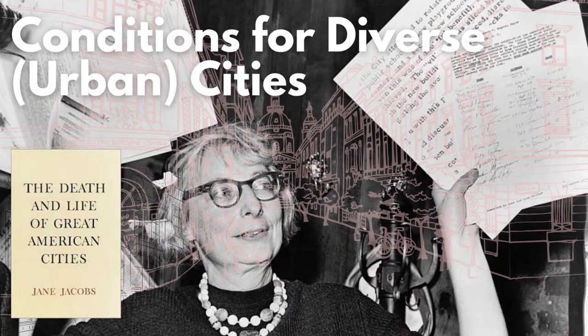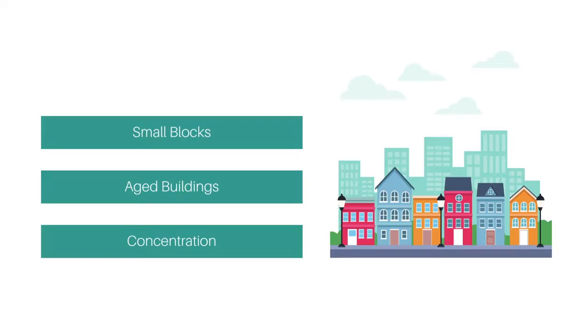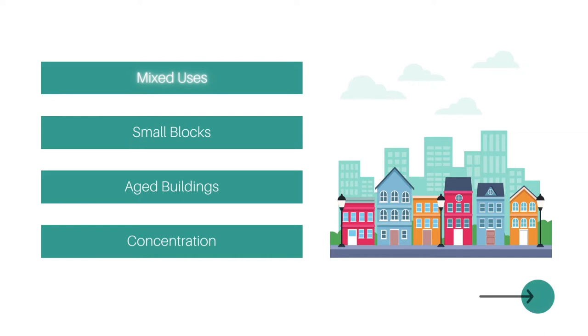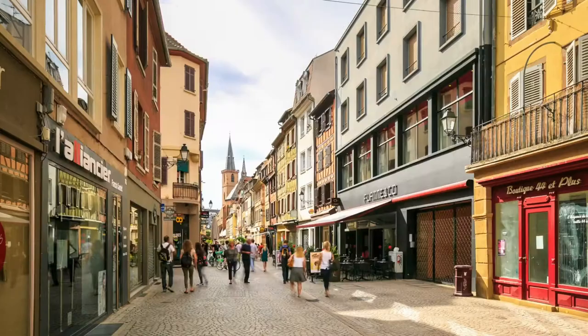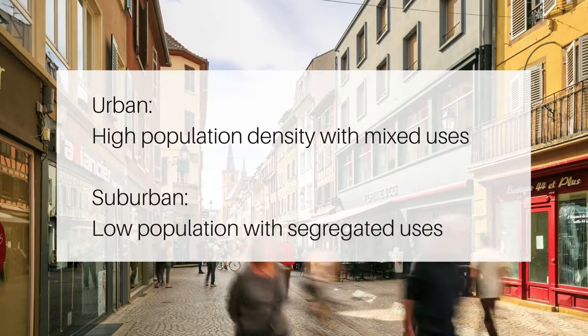In the first video, we looked at her first criteria of a diverse urban area: the need for mixed uses, which is perhaps one of the more obvious criteria, even included in the definition of urban.